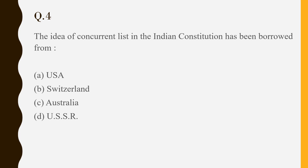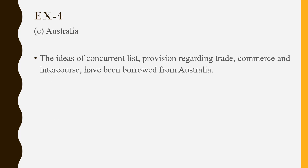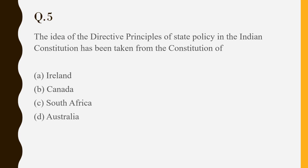The idea of the Concurrent List in the Indian Constitution has been borrowed from Australia. The idea of the Directive Principles of State Policy (DPSP) has been borrowed from Ireland.